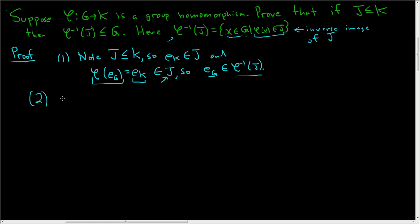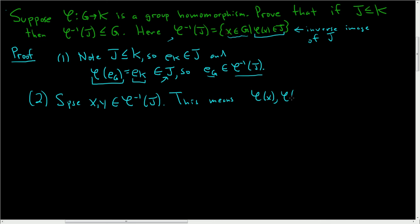Two, we have to show that it is closed under the group operation. So suppose we have x and y in the inverse image. This means that phi of x and phi of y are both in J — that's exactly what it means for x and y to be in the inverse image. If x is in this set, that means phi of x is in J. We have to show that the product xy is also in that set, so we have to show that phi of xy is in J. If phi of xy is in J, that means xy is in the inverse image.